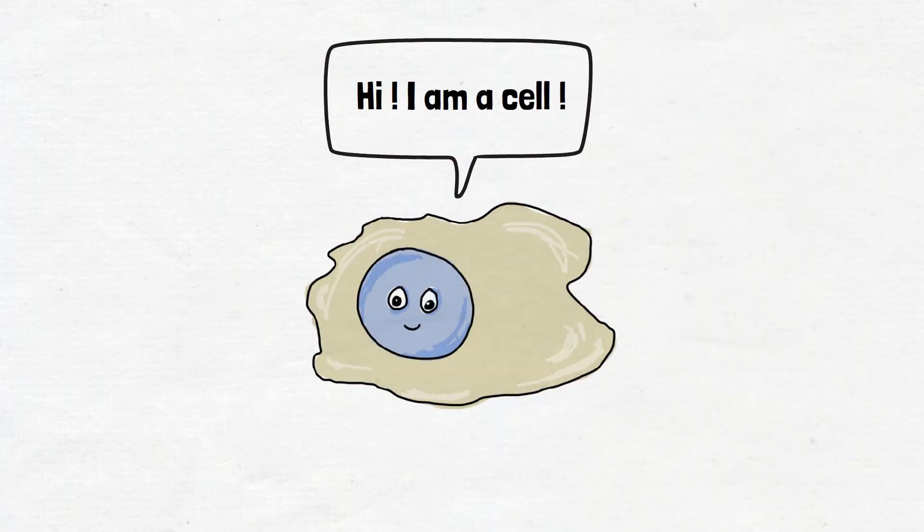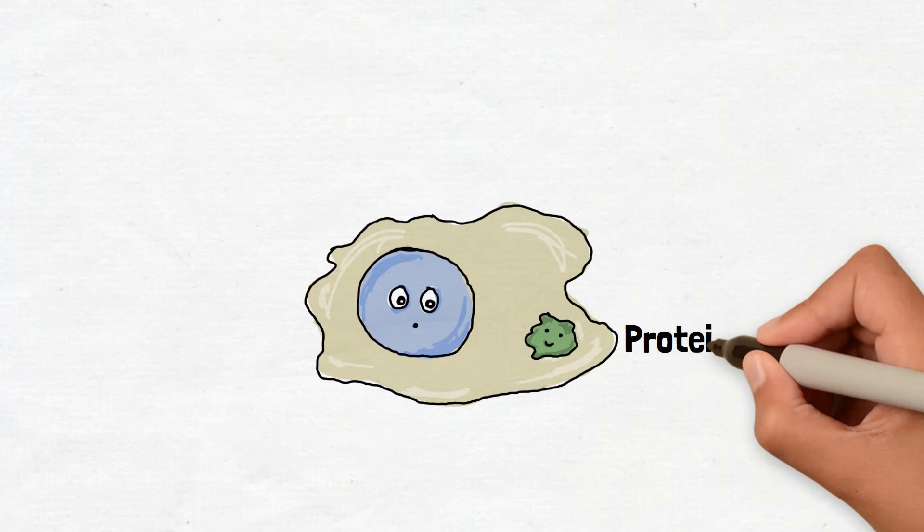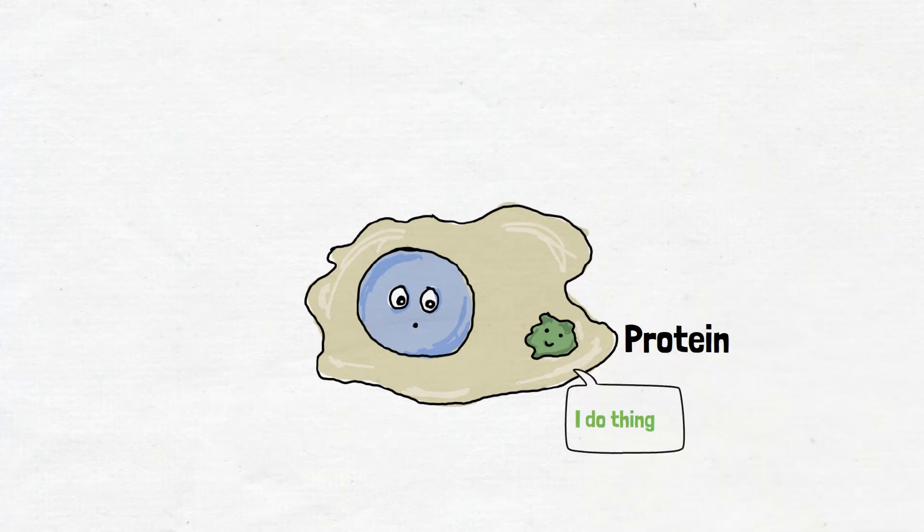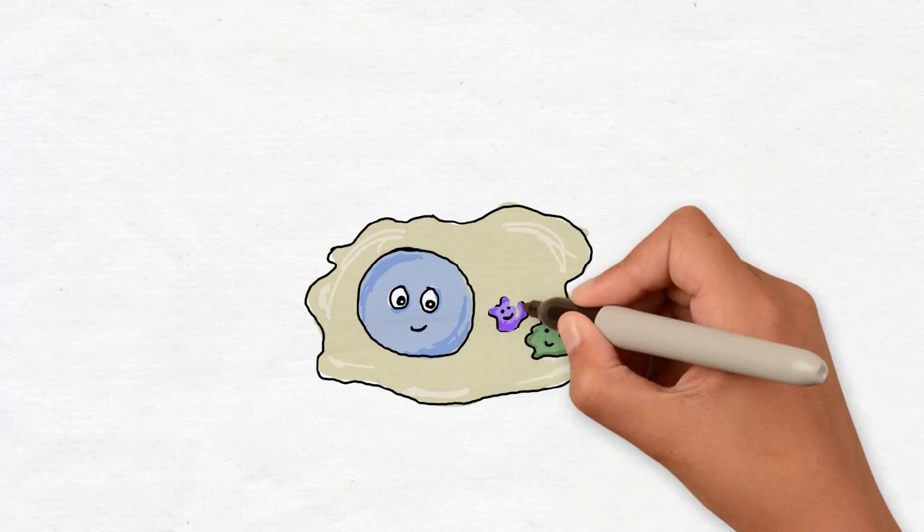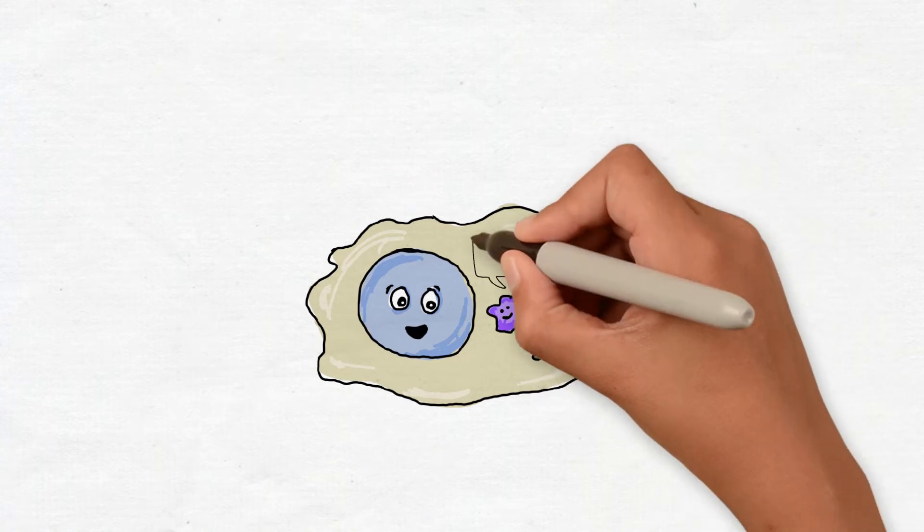Let's start with a cell. Proteins are the action molecules of the cell. Proteins work together to perform complex functions that help the cell grow and survive.